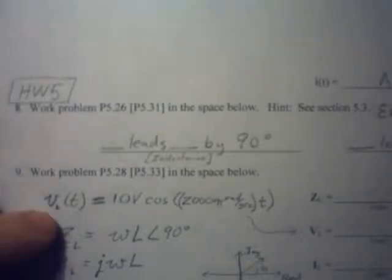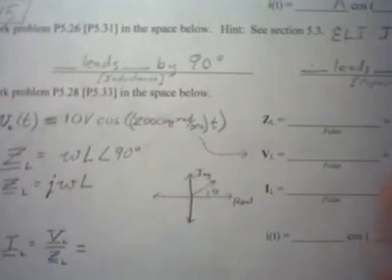So on number 8, all you do is fill in the blanks here. For inductance, you want to say blank leads blank by 90 degrees. And for capacitance, you want to say blank leads blank by 90 degrees. And remember our friend Eli the Iceman to figure out what goes in each of those blanks.